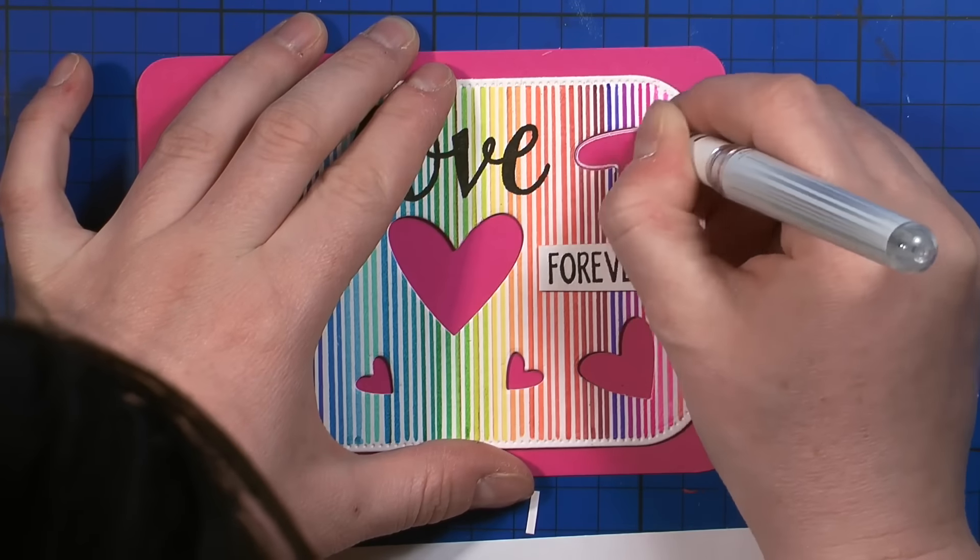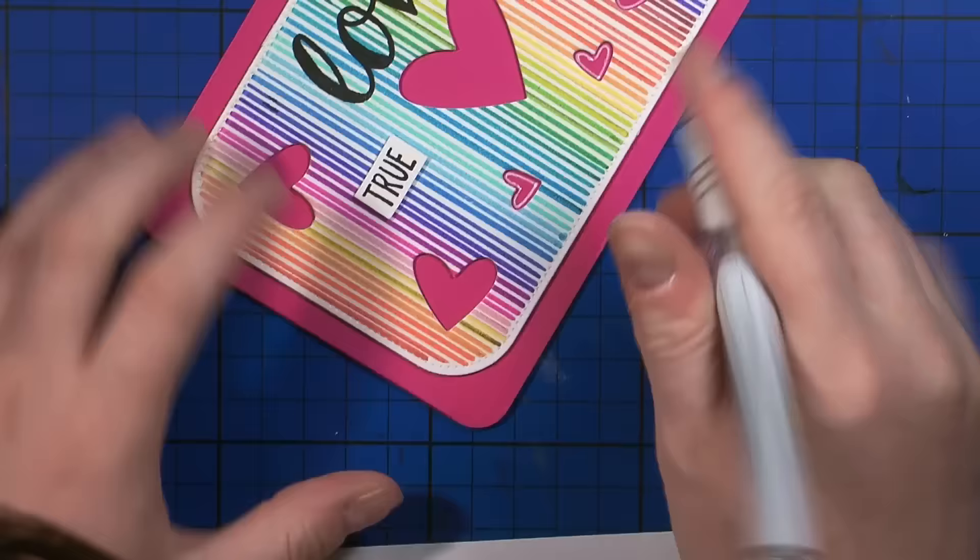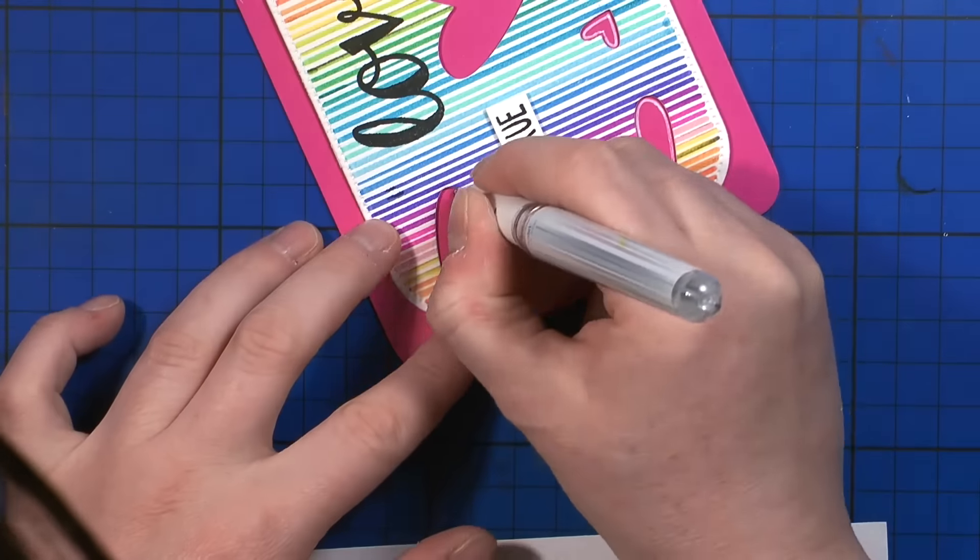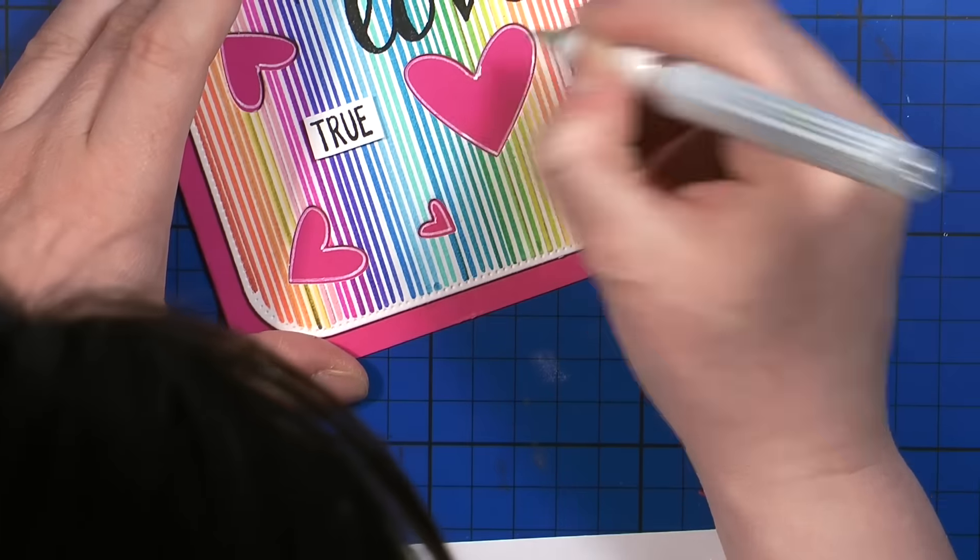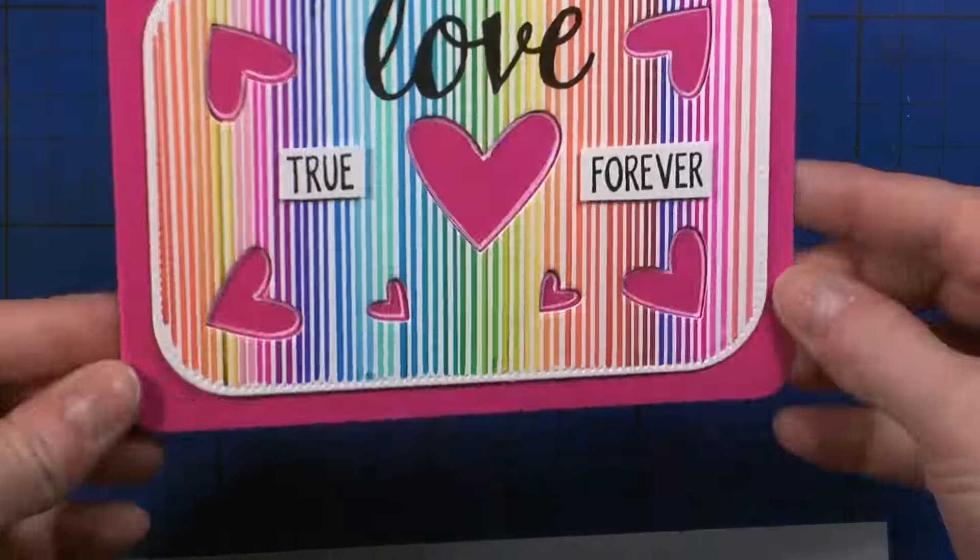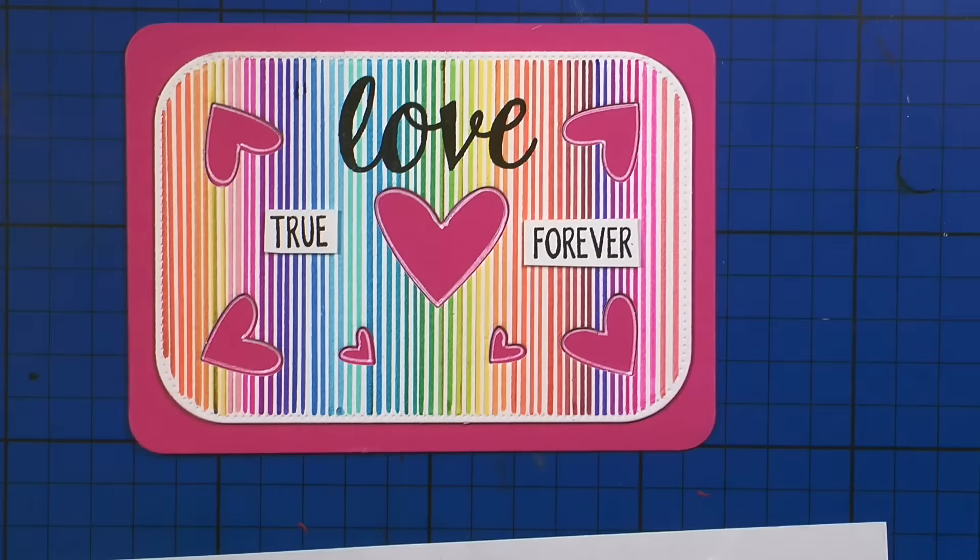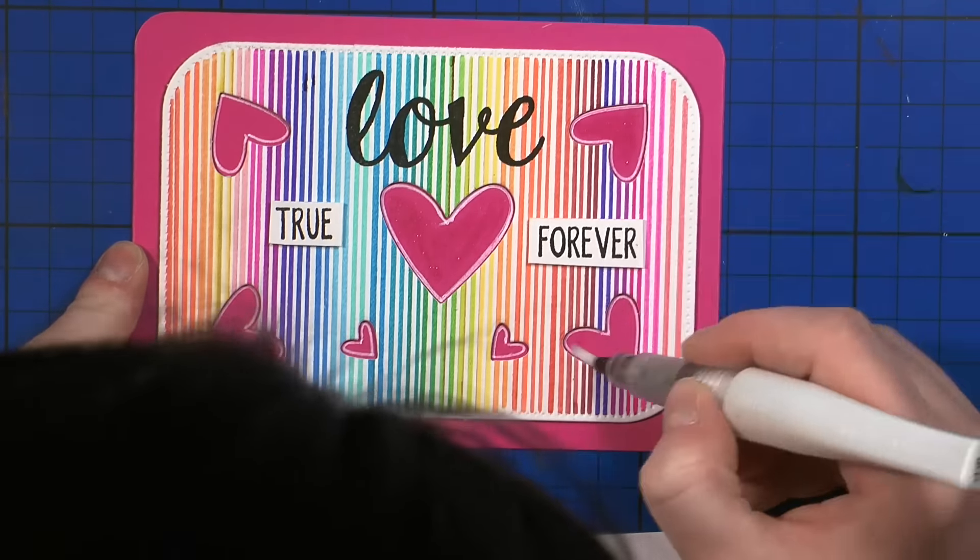Then I decided to add some white gel pen in the middle of all the hearts. So I used it. It's my Signo white gel pen. I'm going to list, by the way, all my supplies that I used in this video in my blog post. Unfortunately, lately I don't have time to add it to my description down below the video.